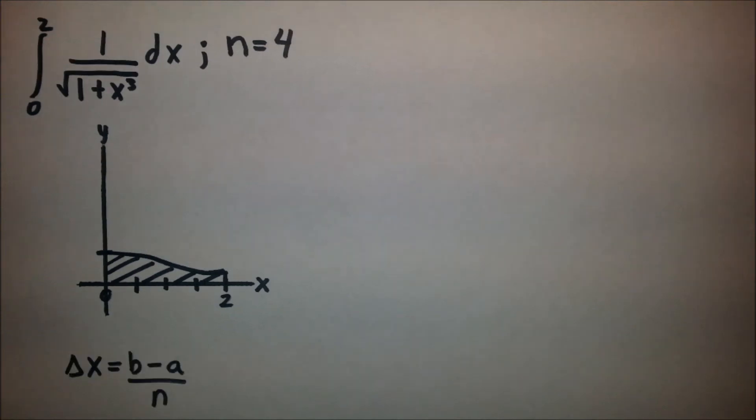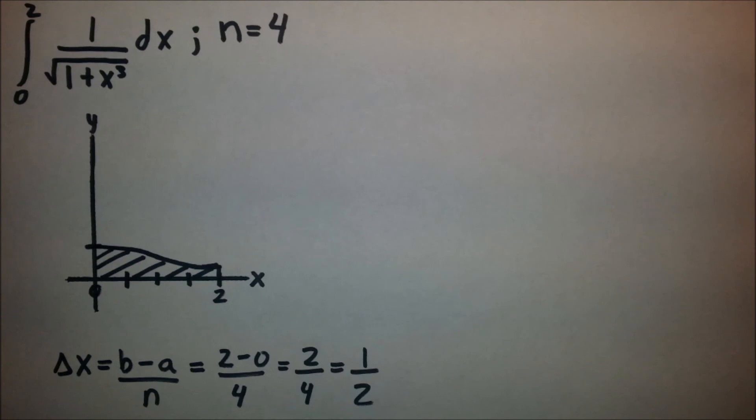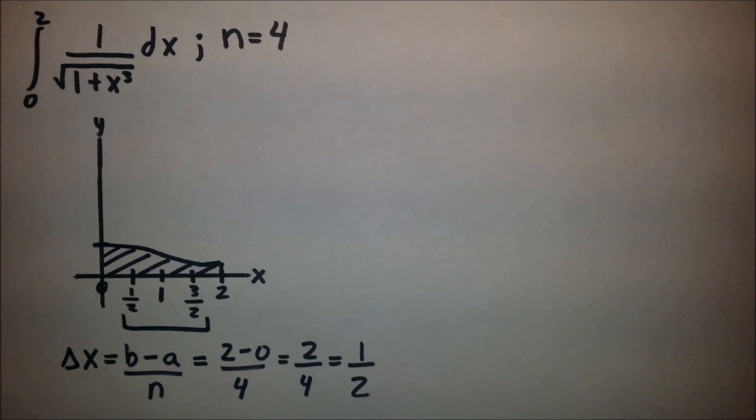So we must first find delta x, which is equal to b minus a over n. So we plug in (2-0)/4, giving us 2/4, which can then be reduced to 1/2. This gives us our intervals in our graph, making it 0, 1/2, 1, 3/2, and 2.